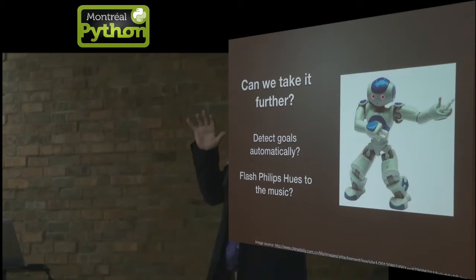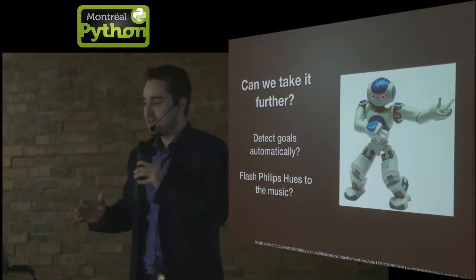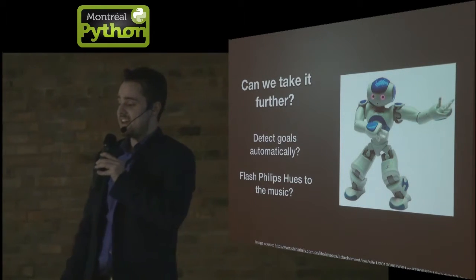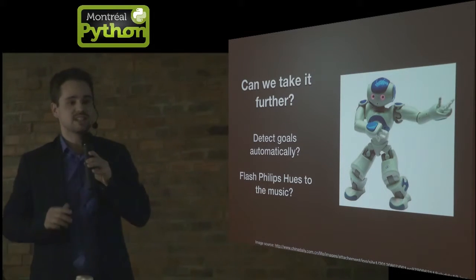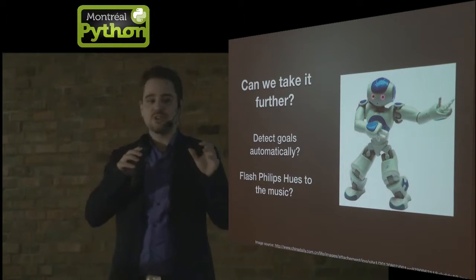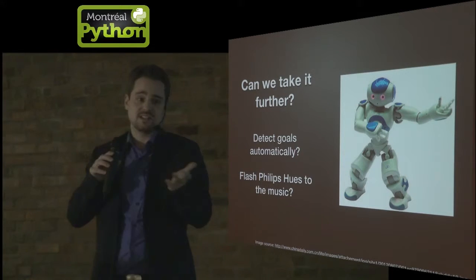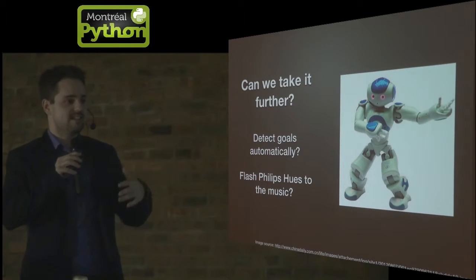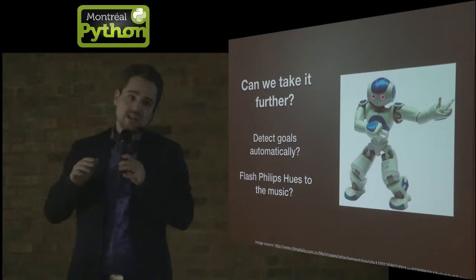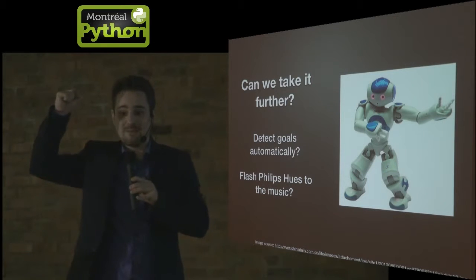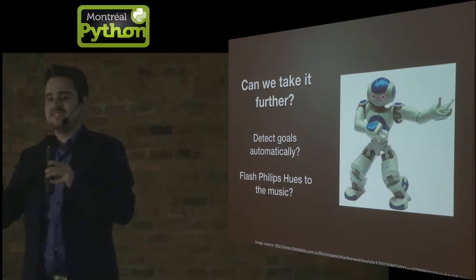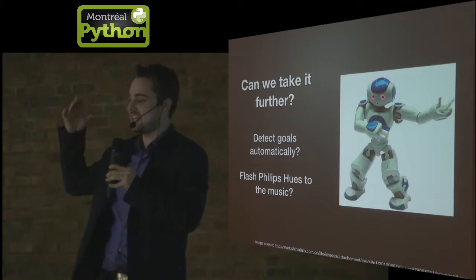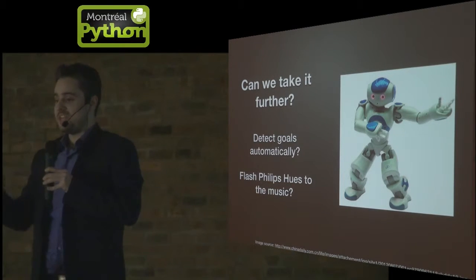But can we take it further? Could we somehow make the goal song start by itself when a goal is scored? Not only that, but I'd bought a couple of Philips Hue lights and thought, wouldn't it be cool if the lights would also flash to the music? The key thing is it's got to go fast. Scraping the web, some API, Twitter — anything like that is a bit too slow. If the team scores and it takes a few seconds until someone does something on the internet that your system can detect, you kind of miss the moment.